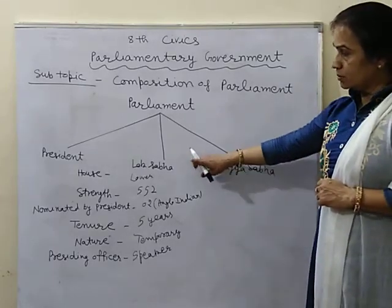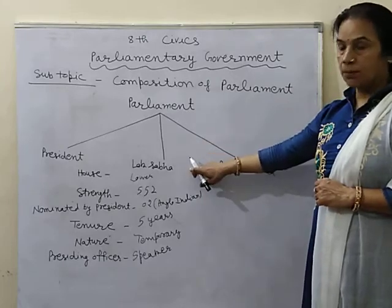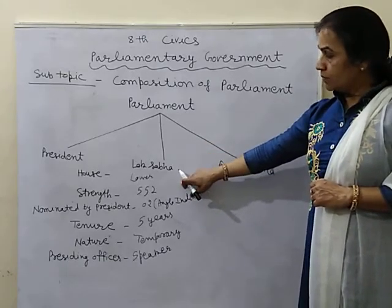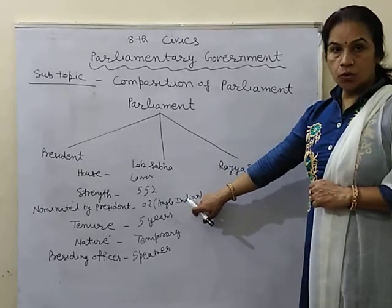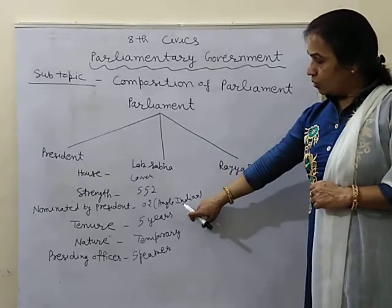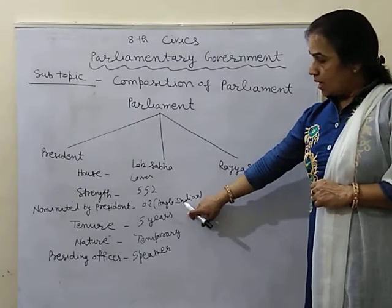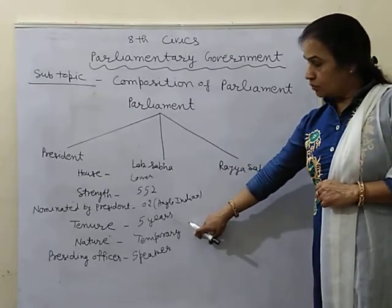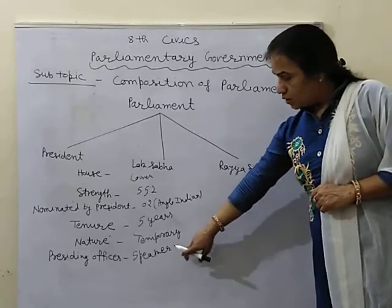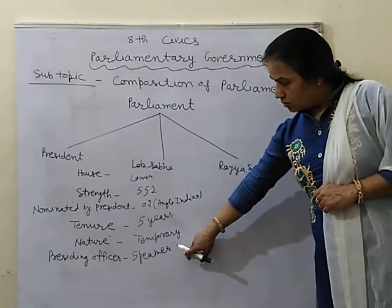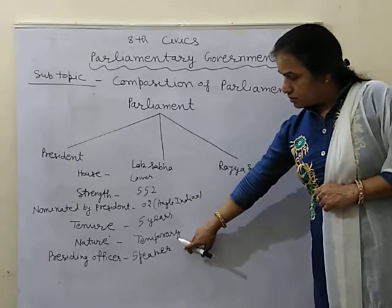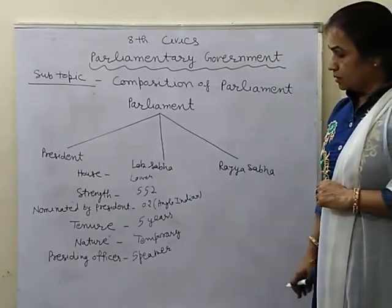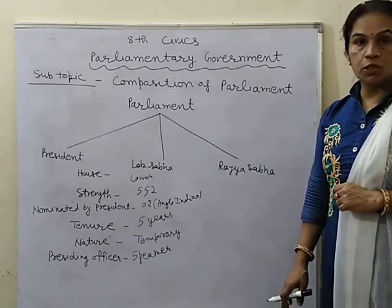Let's review again. Lok Sabha — it is the lower house of the Parliament. Maximum strength is 552. Nominated by President: two members. Tenure: 5 years. Nature: this is the temporary house, because it can be dissolved before its term. Presiding officer is the Speaker of the Lok Sabha. And in the absence of the Speaker, its work is done by the Deputy Speaker.